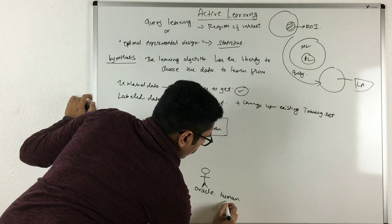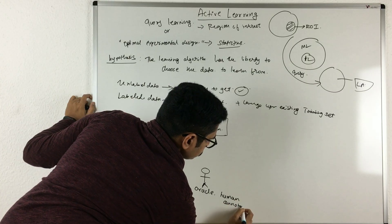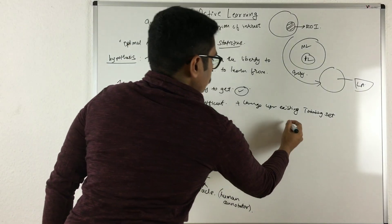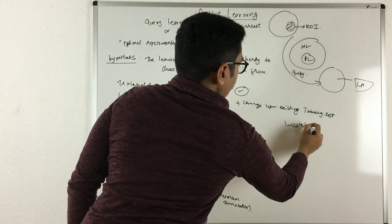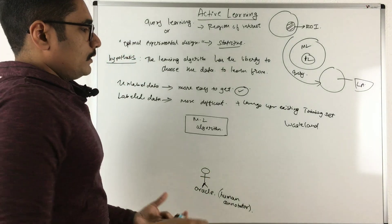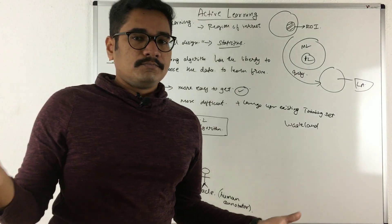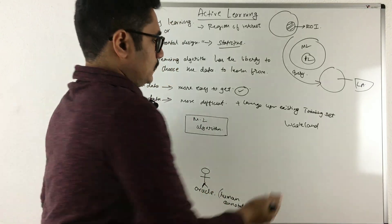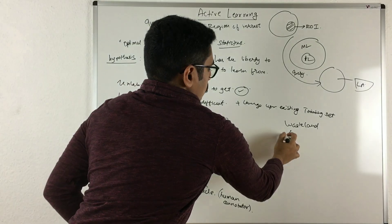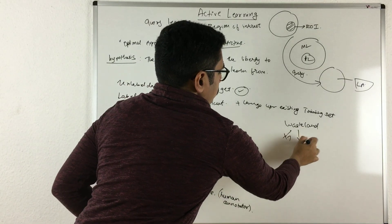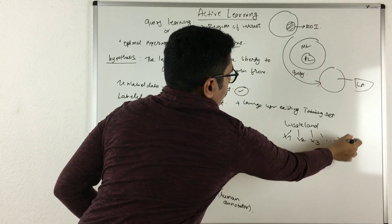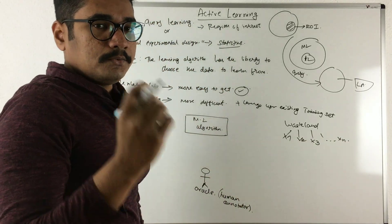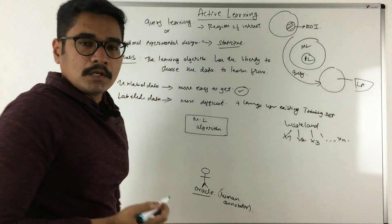Now what is an oracle? It is a human annotator. In order to understand this, say for example you have a wasteland where you throw certain garbage, so it will be filled with different kinds of garbage belonging to different categories. If you ask one person to just label what kind of waste it is - X1, X2, X3 - he'll just put different names to it. So that will take some time. Those can be done only by a human being. That you basically call an oracle.